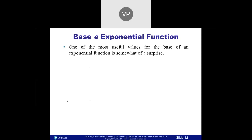Now we get to one of my favorite letters — e. E is a constant, kind of like how pi is always 3.14. E is always approximately 2.7. It goes on forever like pi, but for our purposes it's about 2.7. This is known as the natural number. Everything involving nature, population growth, and anything like that always comes back to this e. It's a perfect number that seems to fit everything in nature — kind of like how pi involves circles, e involves a lot of our natural examples.